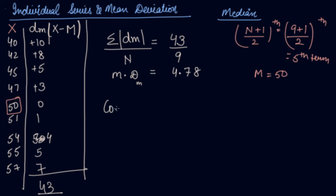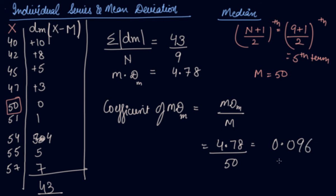Now you have to find the coefficient of mean deviation through median, which equals mean deviation through median divided by median. So this is 4.78 divided by median which was 50, so you get an answer of 0.096. This is how you calculate the mean deviation in case of individual series using median.